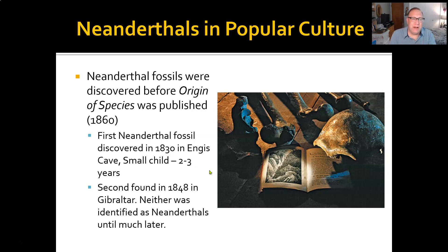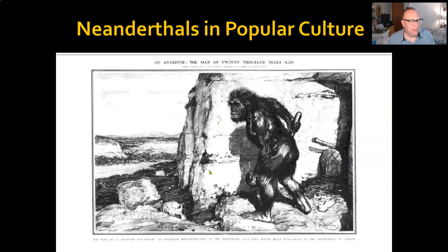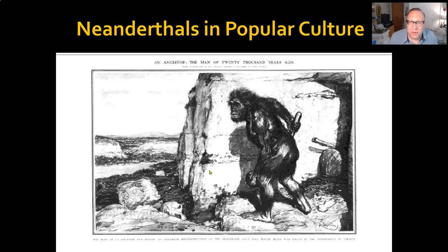Where do they come from? The first discovery was actually made before On the Origin of Species and was not initially identified as a separate species. The first Neanderthal fossil comes to us in 1830 in the Engis Cave — it was a small child, probably two to three years old. The second, found at Gibraltar in 1848, was perceived to be just a sick, arthritic old man. That discovery in particular influenced the depictions later on, since it was an arthritic individual. The assumption was that they were all hunched over with enlarged joints — they didn't know that much about the anatomy of arthritis at that point.